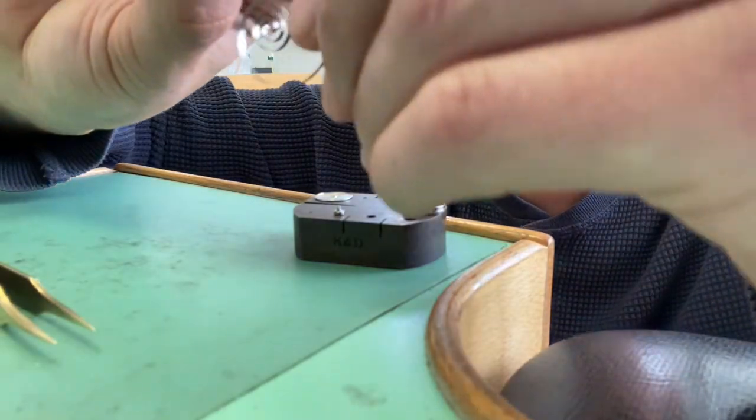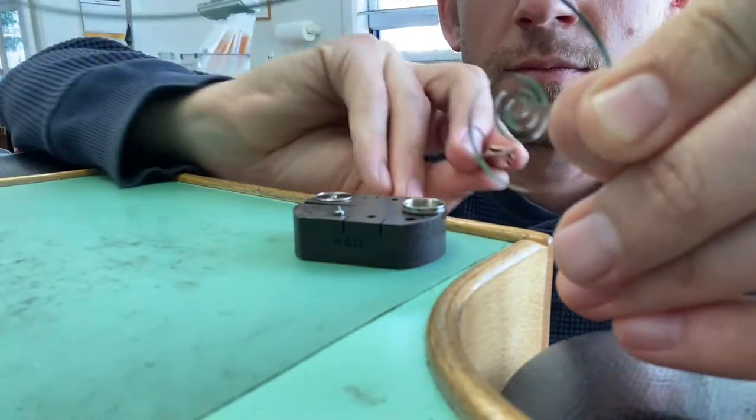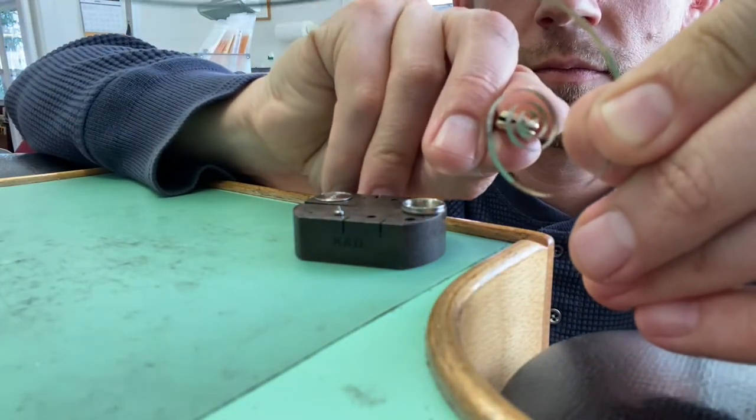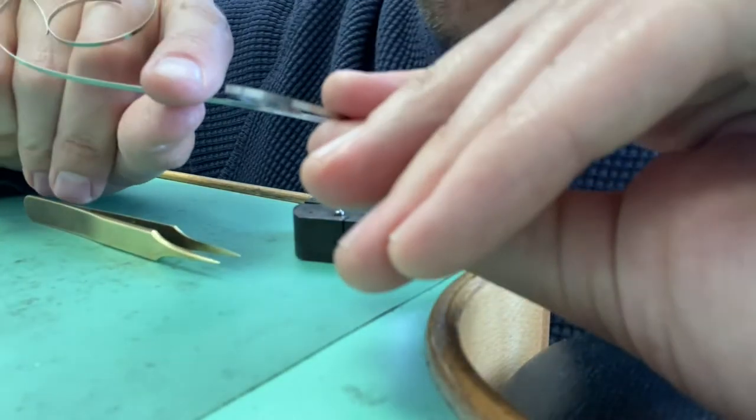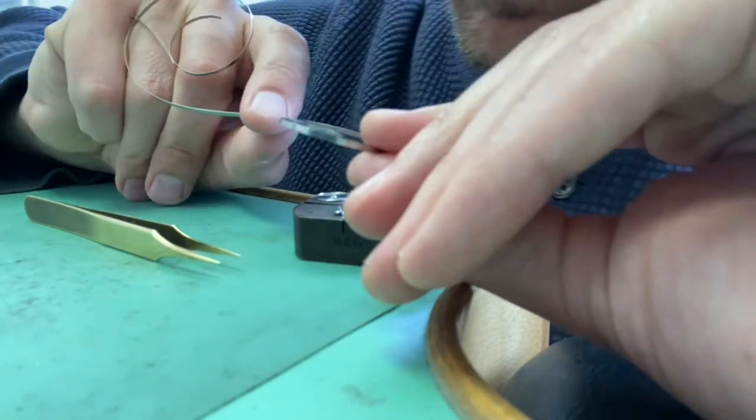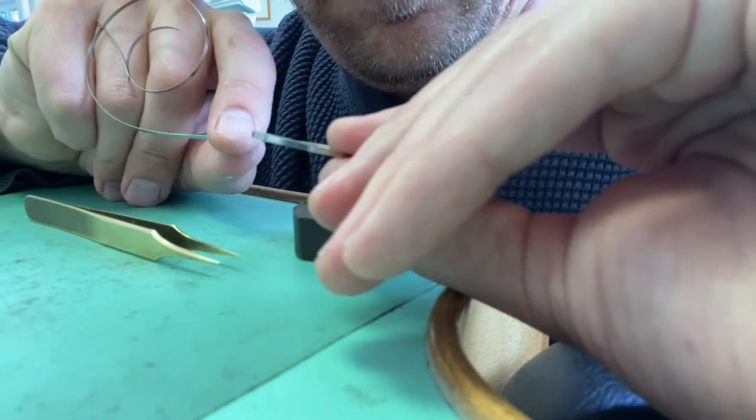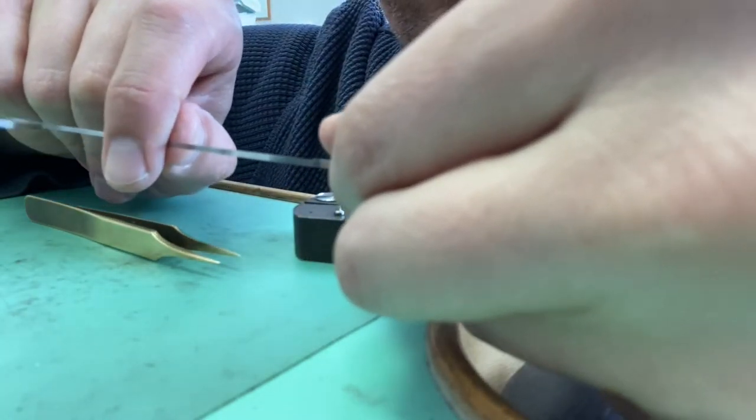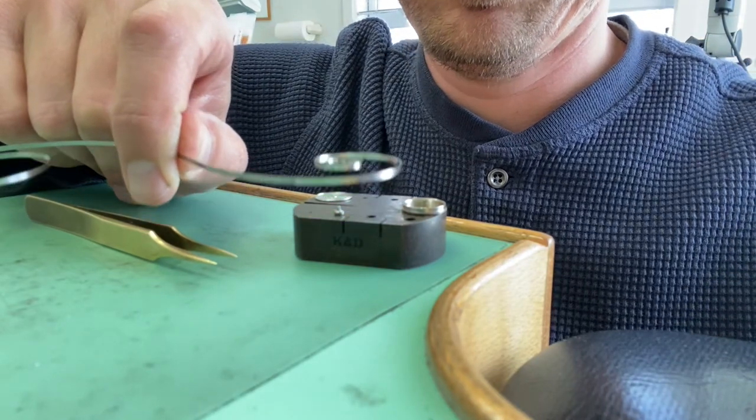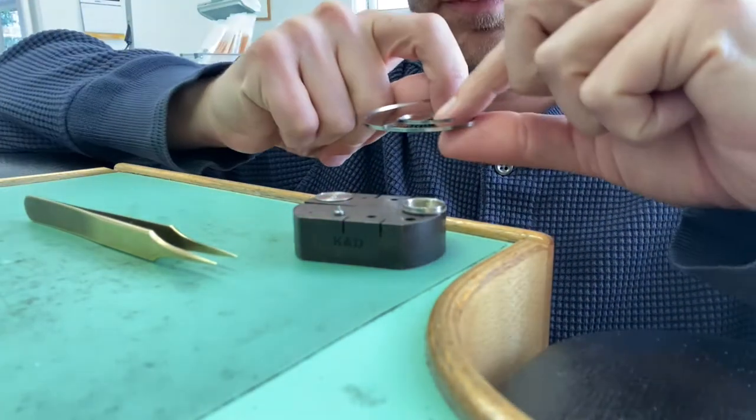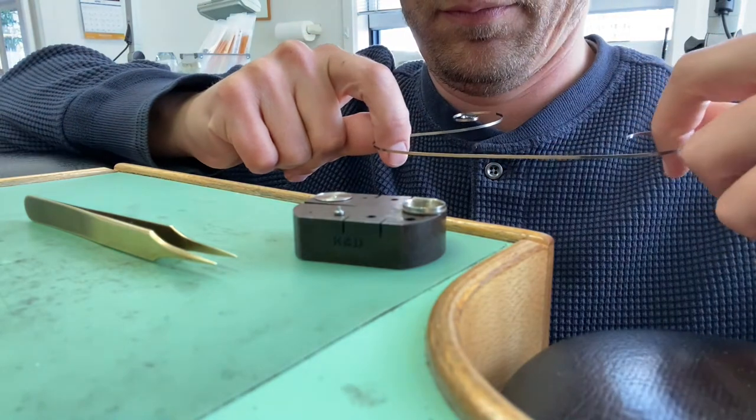Then you take the mainspring, you find the hole inside the coil, and then you line that up with the barrel arbor hook so you know the correct placement.